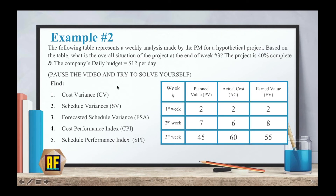Now I have example 2, which I want you to try and solve by yourself to see if you actually understand the concepts. Feel free to go back and look at the equations, pause the video, take a screenshot, or write it in your notes, and try to find the cost variance, schedule variance, FSA, CPI, and SPI. This time the project is 40% complete and the company's daily budget is $12 per day. Pause the video and try to solve it yourself — don't be lazy.